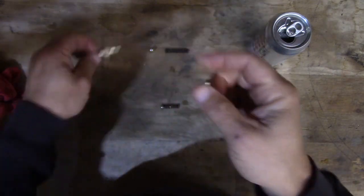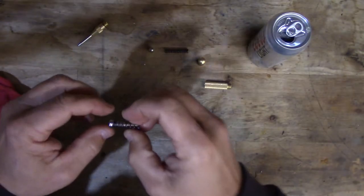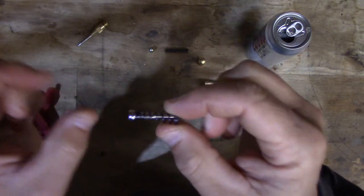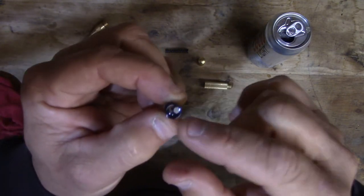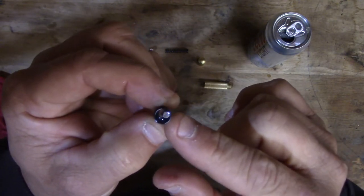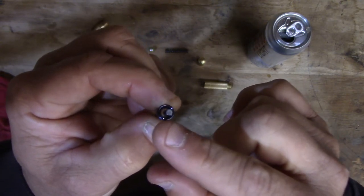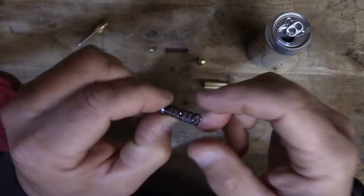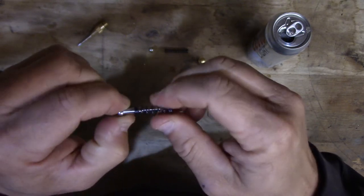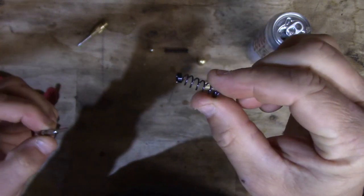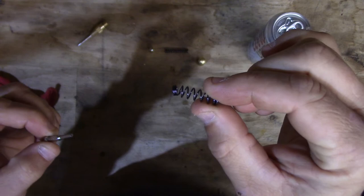Now this part here - if you notice, the pin here is not centered in the spring. That is crucial to the operation of this thing. That's why if you take this apart, you'll see this spring's got a little bend in it. That's how the thing works.